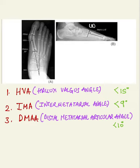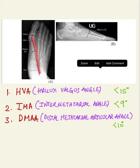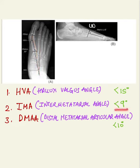The most common angles are three in number. HVA — hallux valgus angle — is defined as the angle between the long axis of the proximal phalanx and the long axis of the first metatarsal, which is normally less than 15 degrees. The second is the intermetatarsal angle, which is the angle subtended by the long axis of the first metatarsal and second metatarsal, the normal of which is less than 9 degrees.